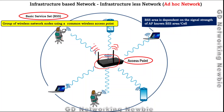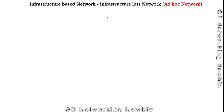The area of the Basic Service Set depends on the signal strength of the antenna — how far the antenna's radiated signals can reach. That covers infrastructure-based networks. Let's now discuss infrastructure-less networks, also known as ad hoc networks.